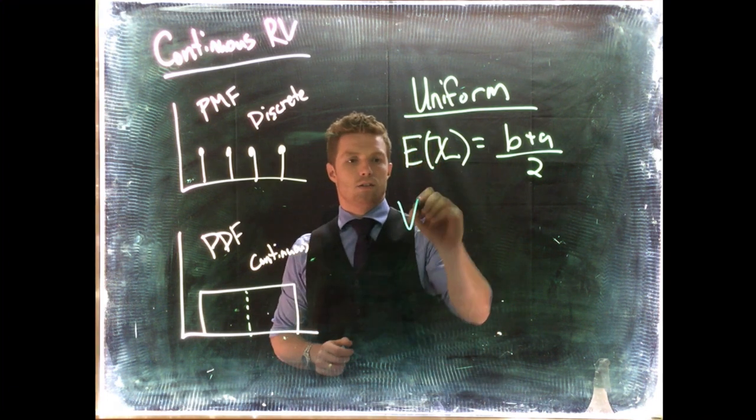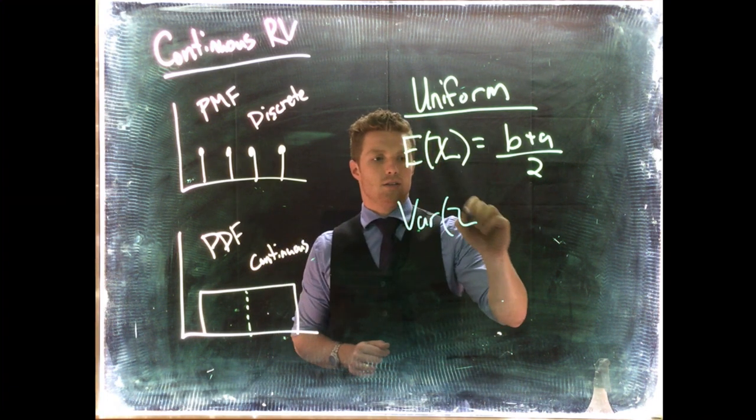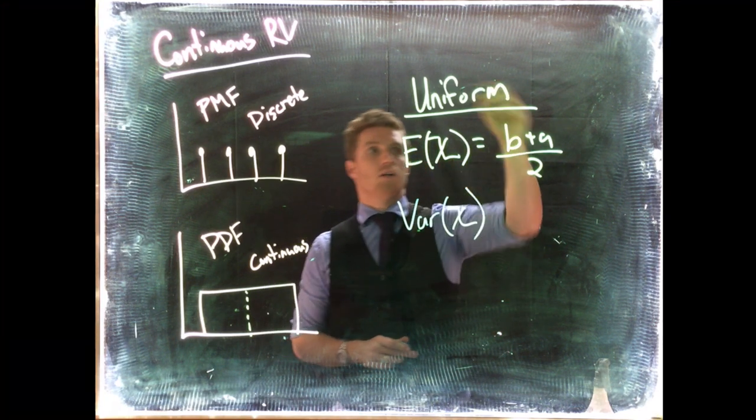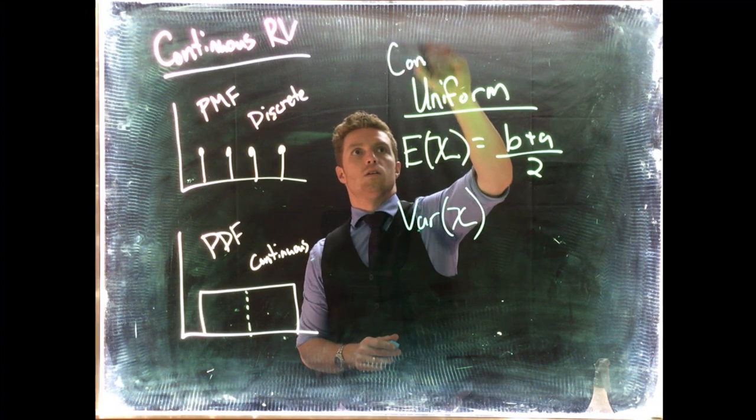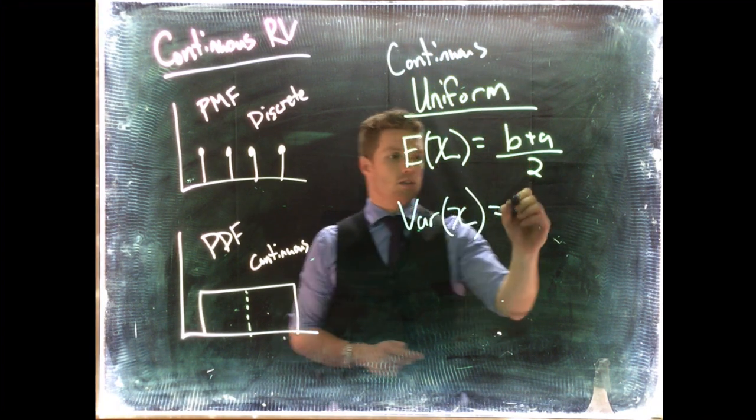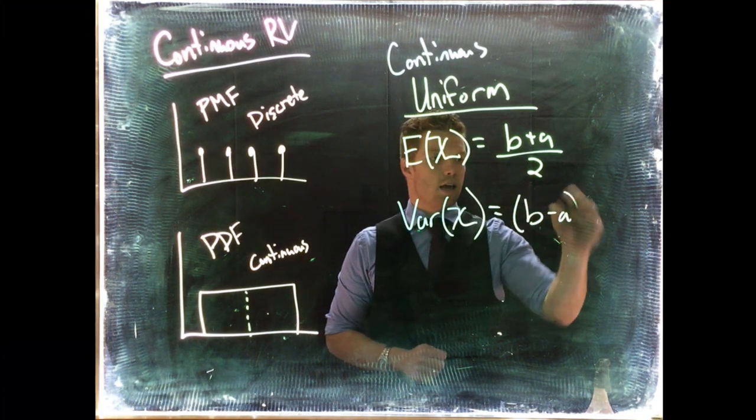the variance of X—let's put that up—variance of our continuous random variable, we're talking about continuous now, uniform continuous. If we want to calculate this, it's going to be B minus A squared